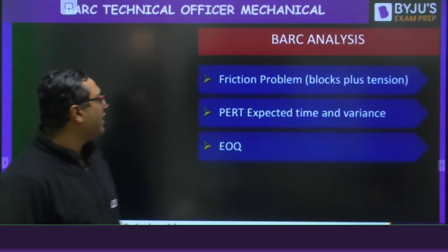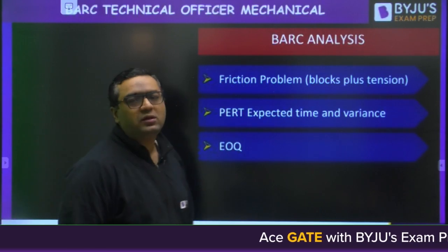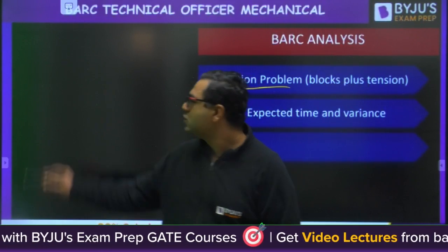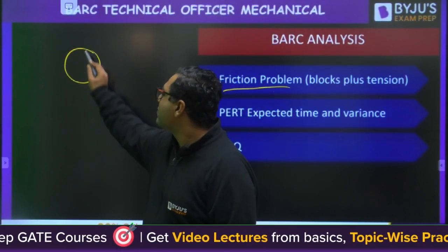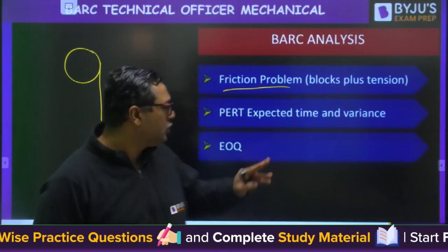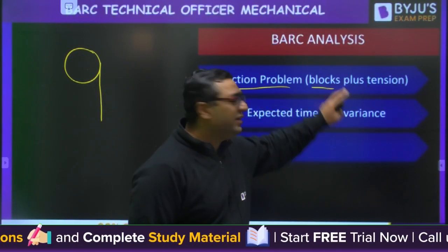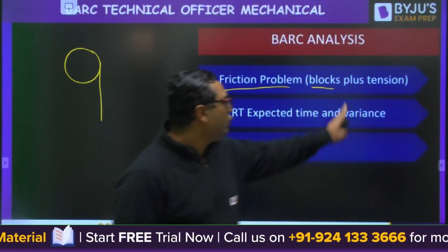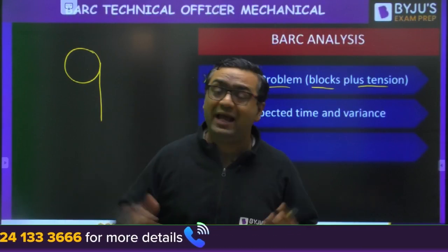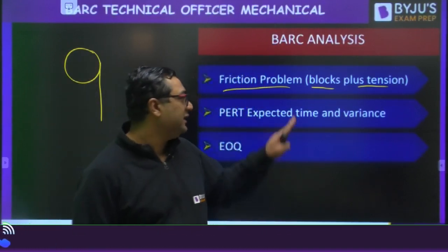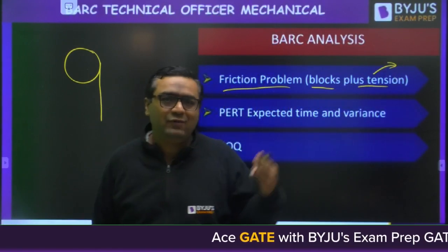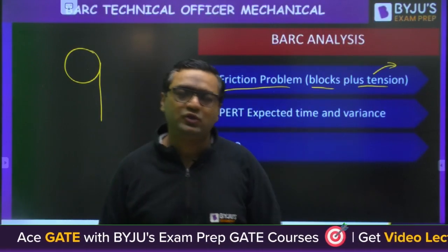There was a question from friction involving two blocks and a pulley. The blocks had a given coefficient of friction with the surface, and there was tension in the pulley involved. I don't have the exact statement, but the question required finding the tension in the string. The figure wasn't fully remembered by students so I cannot provide it, but the question was from this topic.